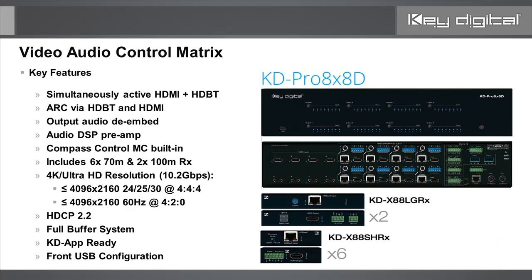It supports 10.2 gigabits per second bandwidth — 4K/30 4:4:4 and 4K/60 4:2:0 — and is a fully HDCP 2.2 compliant system. It also offers front USB configuration so it can be installed in the rack and accessed through the front of the rack, which is something many integrators are very happy about.